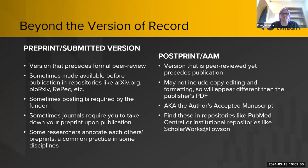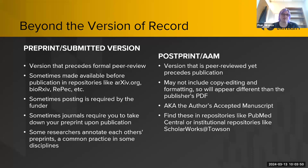We're all pretty familiar with the version of record — the one that actually gets published in the journal. A few other versions might be floating around that you can do something with. The preprint or submitted version precedes your formal peer review. Sometimes these are made available before publication in repositories like arXiv, bioRxiv, or others that might be discipline-specific. Sometimes posting an open access version is required or allowed by the funder. Sometimes journals require you to take it down upon publication, but not always — we'll look at a way to check what journals allow.